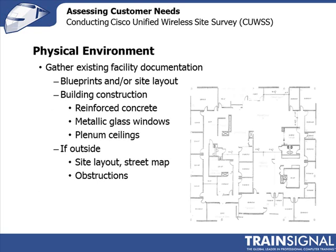Before you go out and do your site survey, I always like to ask the customer to send me something that describes the building — I'll ask for the blueprints. Often blueprints aren't available, so they'll send me a site plan. What you're looking at in this illustration is when I asked TrainSignal to send me their office layout. They sent me a PDF with a picture of where the offices and doorways are. If I had been given a blueprint, I would have been able to see what the walls are made of, whether it's glass partitioning or plenum-rated ceilings. Always ask for this ahead of your site survey.